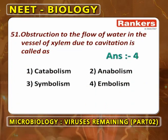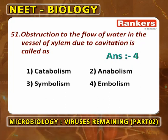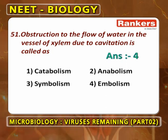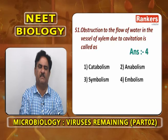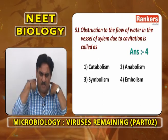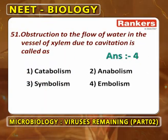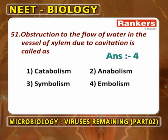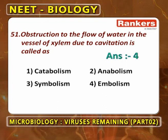Obstruction to the flow of water in the vessels of xylem due to cavitation is called embolism. Whenever water is moving as a continuous water column and an air bubble forms, cavitation occurs. Once cavitation occurs, the continuous movement of water stops. This is popularly called not catabolism, anabolism, or symbolism — it is embolism. Fourth option.